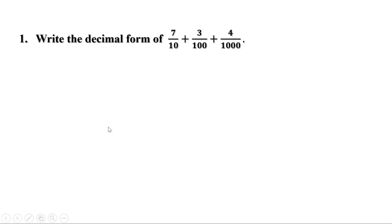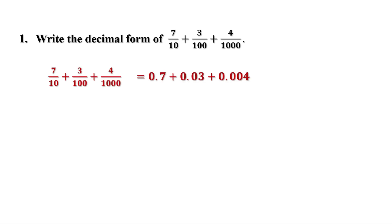First problem: write the decimal form of 7 by 10 plus 3 by 100 plus 4 by 1000. 7 by 10 is 0.7, 3 by 100 is 0.03, 4 by 1000 is 0.004. So we can write 7 by 10 plus 3 by 100 plus 4 by 1000 as 0.7 plus 0.03 plus 0.004.